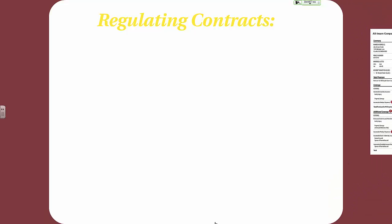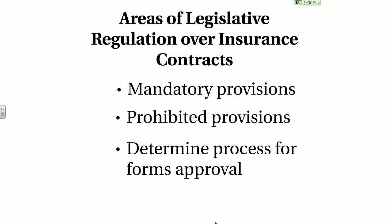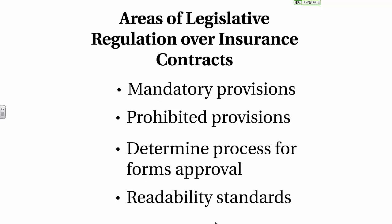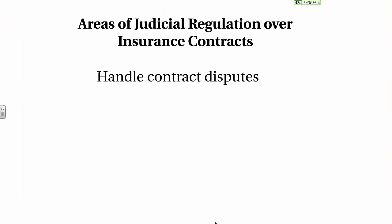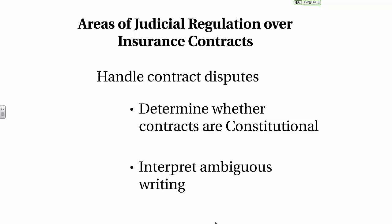Now let's look at contract language. In terms of regulating contracts, this can be broken up into the three branches of government, starting with legislators. Legislators create mandatory provisions in the contract — for example, providing uninsured motorist or no-fault protection — as well as prohibited provisions, and legislators determine the process for forms approval and rating approval. Legislators in many states have also passed readability standards, which say that an insurance contract must be understood by individuals with certain levels of education, such as a fourth-grade reading level. Courts handle contract disputes, determining whether contracts are constitutional and interpreting any ambiguous writing — and because the insurance contract is a contract of adhesion, any ambiguity is interpreted by the courts in favor of the policyholder.